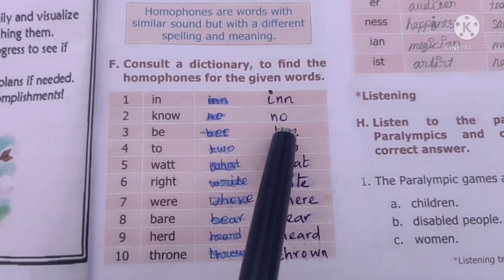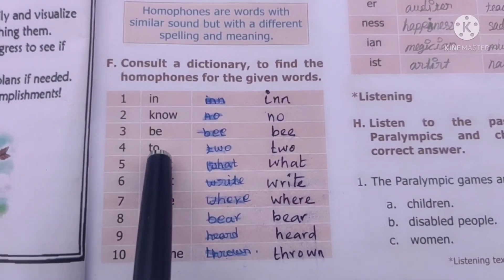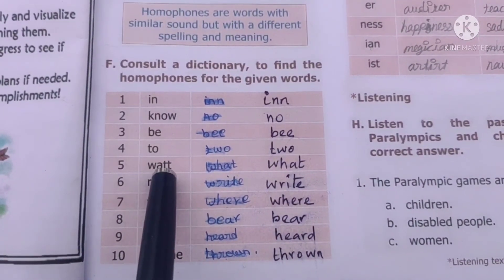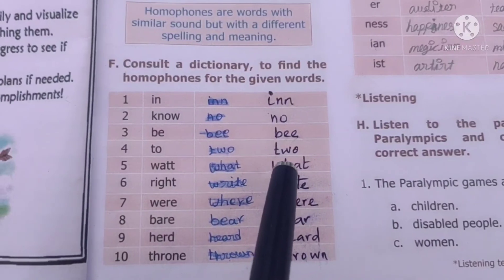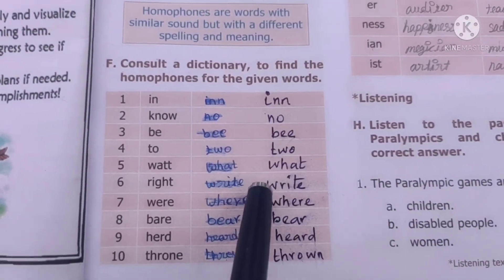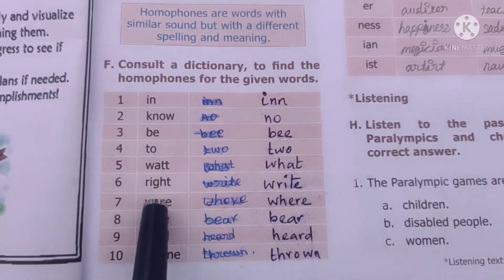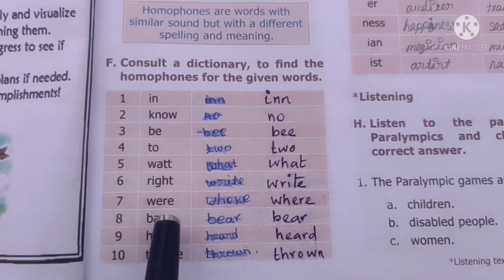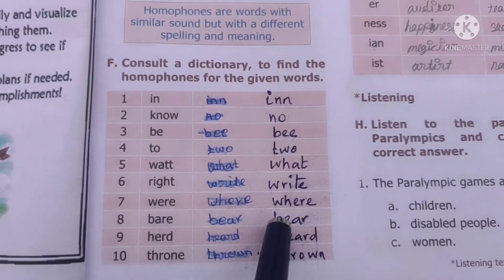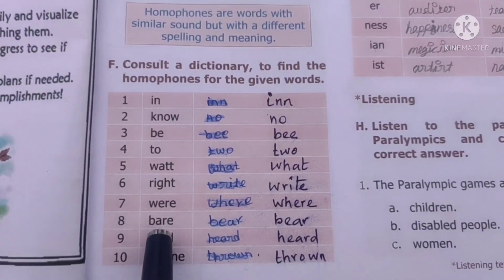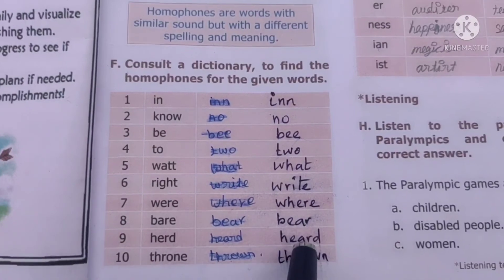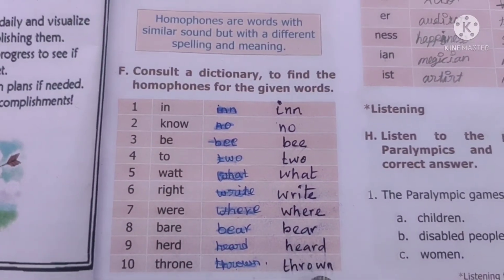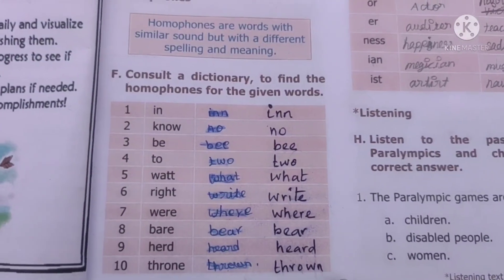B-E, be — homophone B-E-E, bee. T-O, to — homophone T-W-O, two. W-E-I-G-H-T, weight. R-I-G-H-T, right. W-R-I-T-E, write. B-A-R-E, bare — homophone B-E-A-R, bear. P-H-O-N-E, phone.